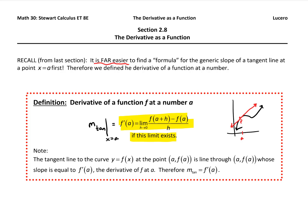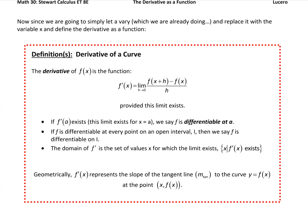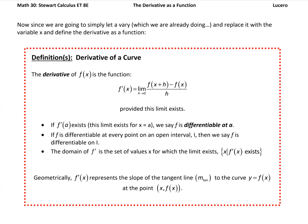We found f prime of a generically, so that if we want the slope at point P1 or at another point P2 with x-value b, we can just plug in b instead of a. It's way easier to come up with a generic formula and use it to find the slope of tangent lines at multiple points — all the points in the domain of the function. Now we're going to expand this idea: replace a with x and call it a function, the derivative as a function.